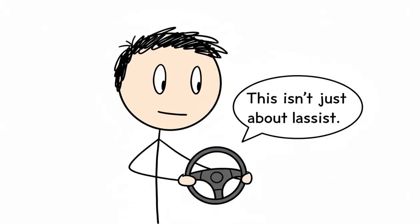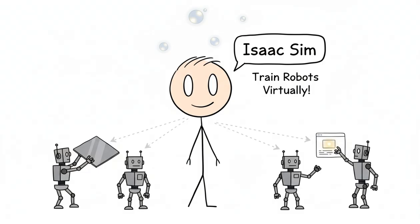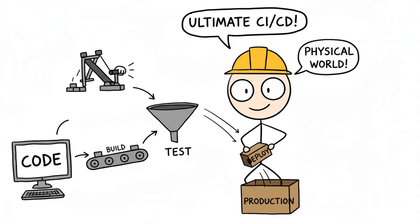This isn't just about lane assist. It's about building a centralized AI brain for cars, trucks, and last-mile delivery robots. Through their Isaac Sim platform, they let you train these robots in a virtual universe before they've even bent a single piece of sheet metal. It's the ultimate CI/CD pipeline for the physical world.